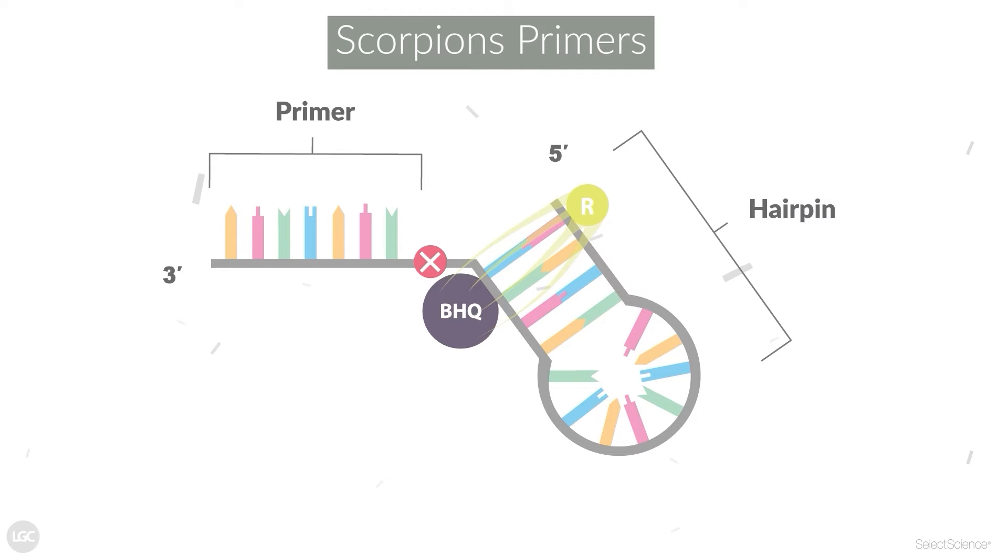Like molecular beacons, the hairpin brings the reporter and quencher into close proximity, and the loop contains a sequence complementary to the target. A blocker sits between the primer and probe to prevent primer extension in the direction of the probe.